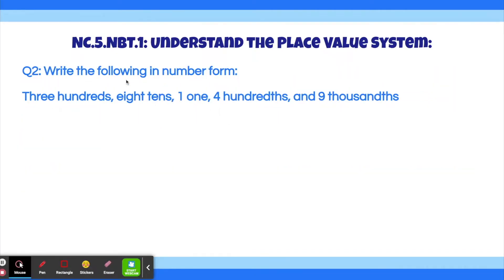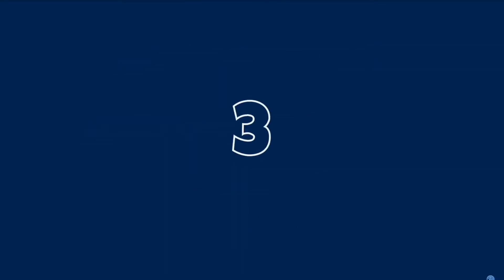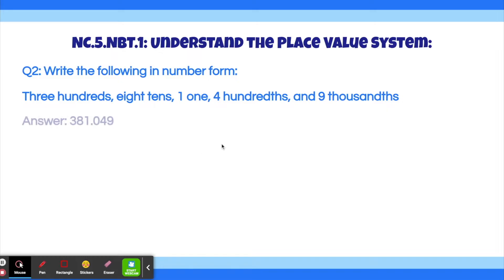Question 2. Write the following in number form: three-hundredths, eight-tens, one-one, four-hundredths, and nine-thousandths. I'll give you guys a few seconds to solve this problem. The answer to this problem is 381.049.